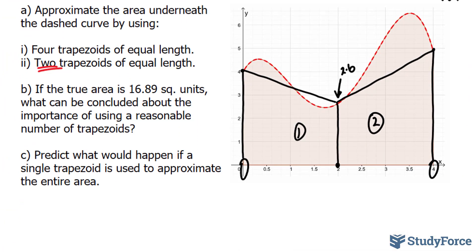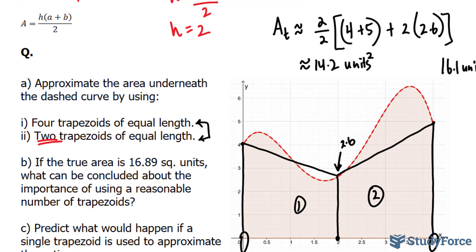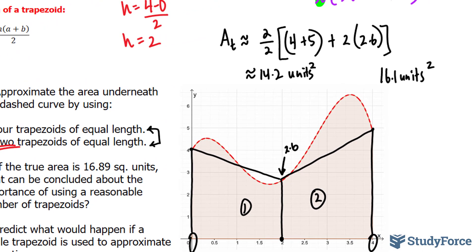If the true area is 16.89 square units, what can be concluded about the importance of using a reasonable number of trapezoids? And this question goes back to that original thought experiment where I asked you to determine which of these two will generate the more accurate area. And it is clear that using more trapezoids, since 16.1 is closer to 16.89, generates a more accurate area. And the fewer trapezoids you use, the less accurate your findings will be.